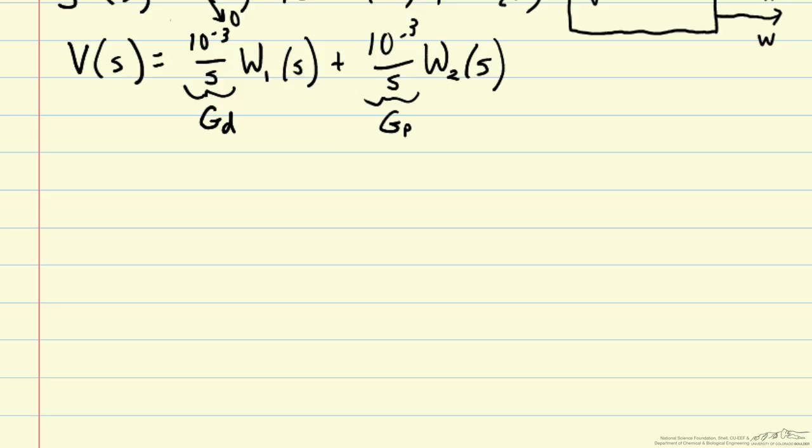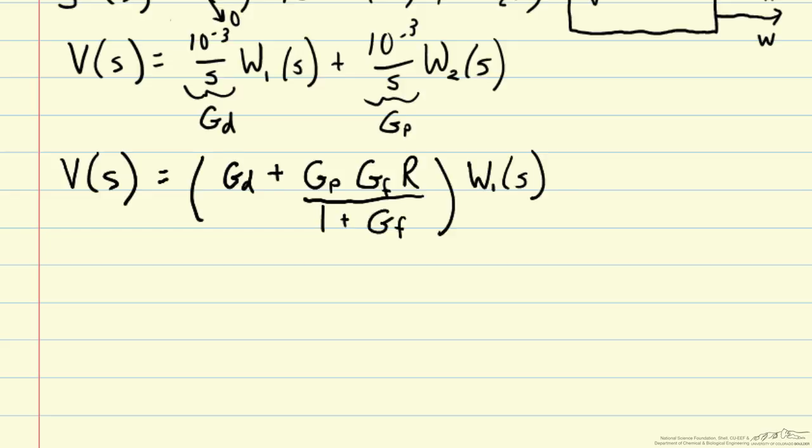In the last screencast, we derived a general expression for how the volume in the tank V would change under ratio control. So we have this general expression, and one thing to notice here is that there's only really one input to this process under feedforward control. The only input now is w1, because w2 is calculated based on the measured w1.